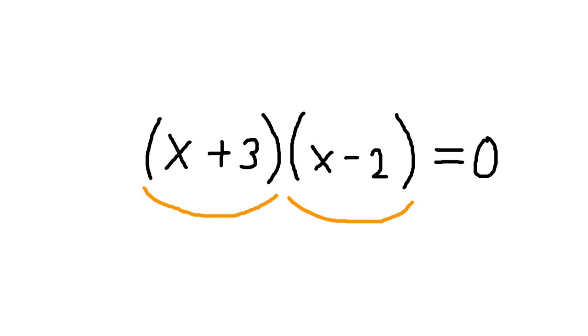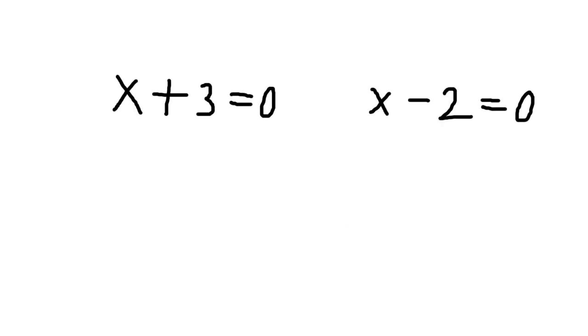Then this would be two numbers that multiply together to equal 0. x plus 3 is one, and x minus 2 is the other. But what do we know about multiplying two numbers together and ending up with 0? Well, at least one of the two numbers must be equal to 0.